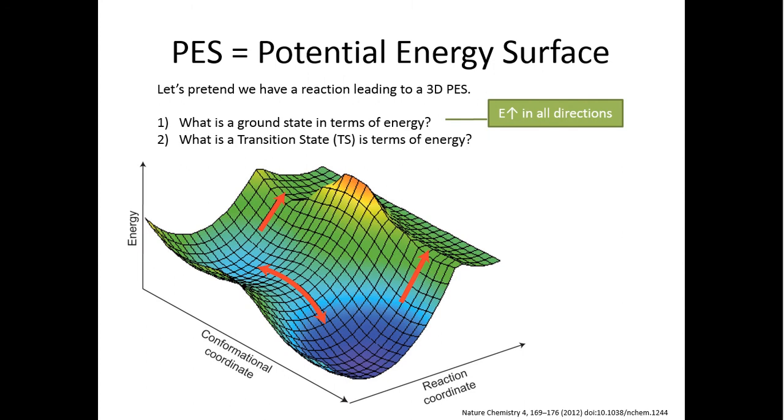The ground state is a place on this potential energy surface where no matter where you're trying to go and no matter what direction you take a step into, you will always increase in energy. And for the transition state it's a saddle point.